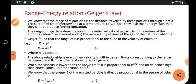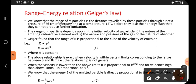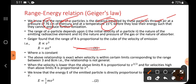they cannot produce further ionization. This is the definition of range. The range of alpha particles is the distance traveled through air at a pressure of 76 cm of mercury and at a temperature of 15 degree Celsius. Before they lose their energy — while traveling through air, they continuously lose energy.